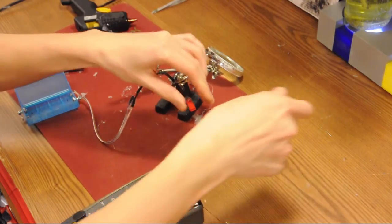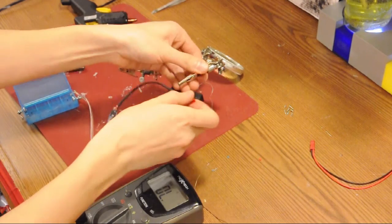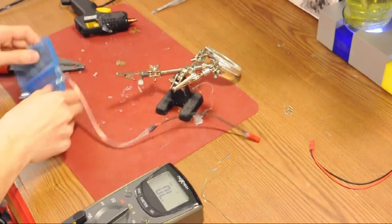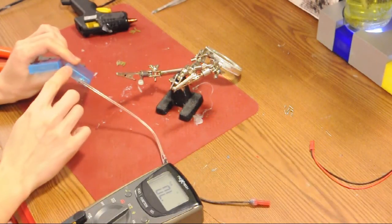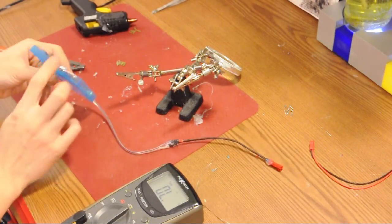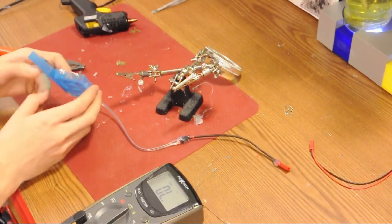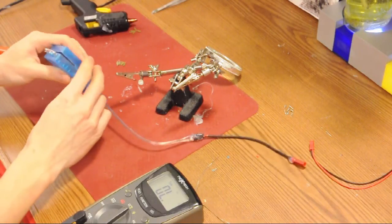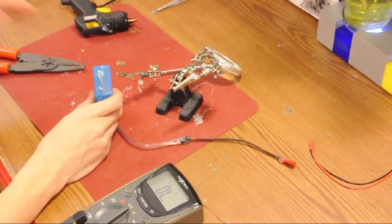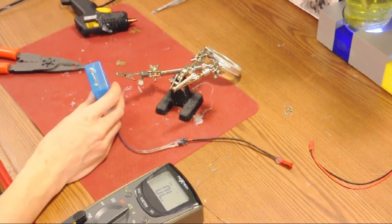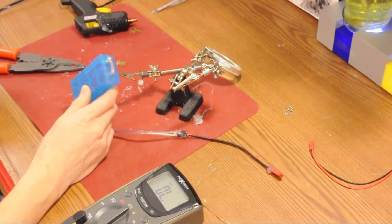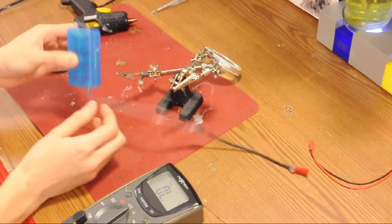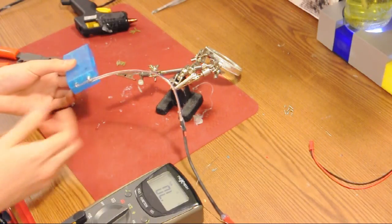Now that we know that we have good connections, we're going to cover up the screws and the springs on the outside with hot glue. Again, to provide insulation from short circuits as well as to add strength so that these wires that we soldered on don't get torn off.